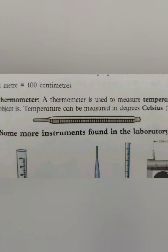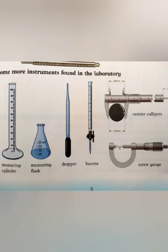Next ہے Meter Rule — یہ length وغیرہ measure کرنے کے لیے use ہوتا ہے۔ Thermometer — یہ temperature کو measure کرنے کے لیے use ہوتا ہے اور temperature کو Celsius اور Fahrenheit میں measure کیا جاتا ہے۔ اس کے علاوہ وہ instruments جو laboratory میں استعمال کیے جاتے ہیں آپ کو diagram میں دکھائی دے رہے ہیں، جن میں شامل ہیں: Measuring Cylinder، Dropper، Vernier Calipers، اور Screw Gauge۔ یہ وہ تمام instruments ہیں جو ایک laboratory میں experiments کے دوران use کیے جاتے ہیں۔